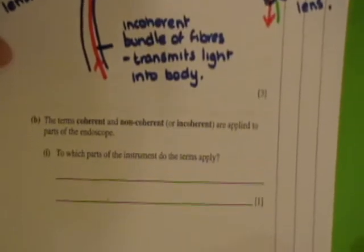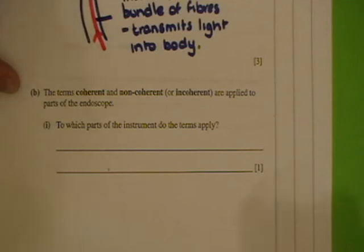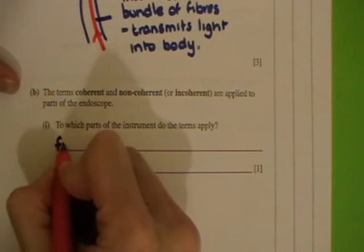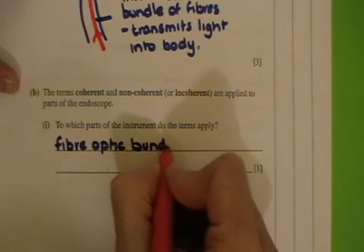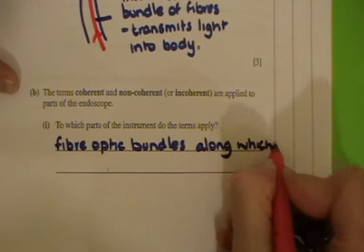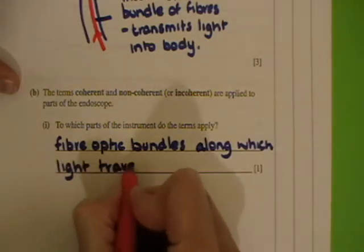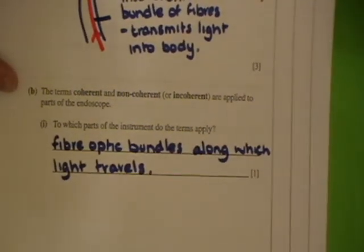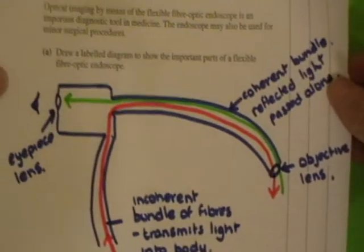Part B of the question: the terms coherent and non-coherent or incoherent are applied to parts of the endoscope. To which parts of the endoscope do the terms apply? They apply to the fiber optic bundles along which light travels — the fiber optic bundles which allow the light to be passed into the body, and then the light to move out of the body again.